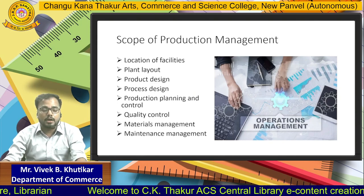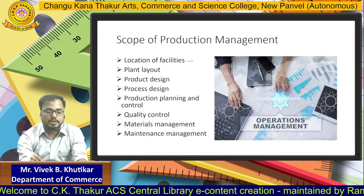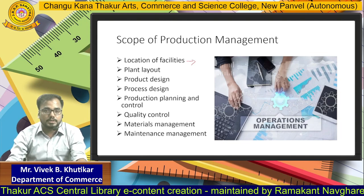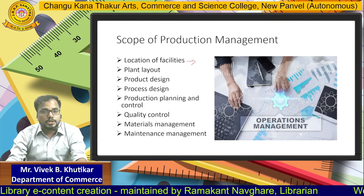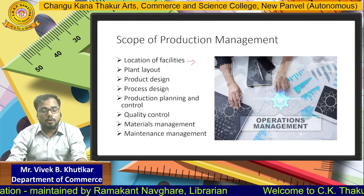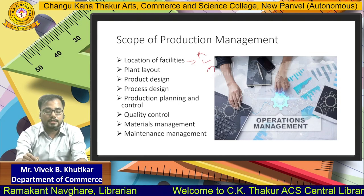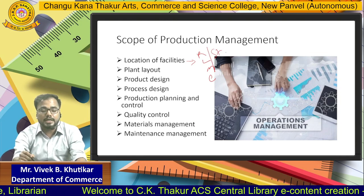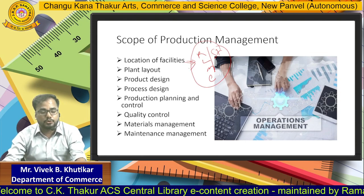The first scope or area of Production Management is Location of the Facility, which means the location of the factory where actual production takes place. We have to choose a location for our production activity or factory that is nearest to our requirements. What is required for production is Raw Material, Labour, Machine, Equipments, or the storage facility. Our location of the facility should be near so that we can get all these factors easily and in a very short time.